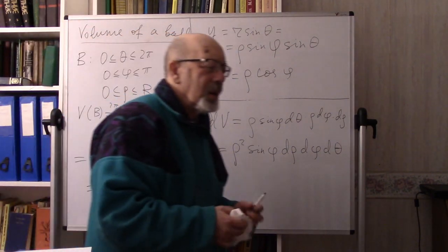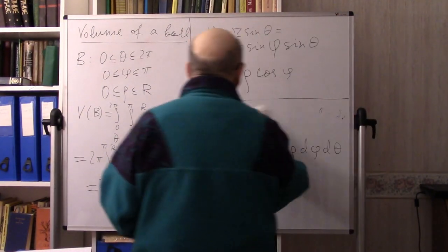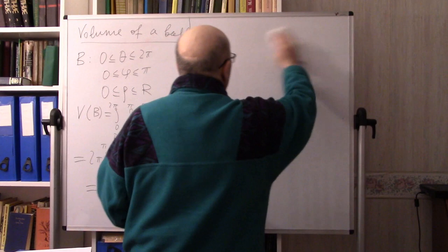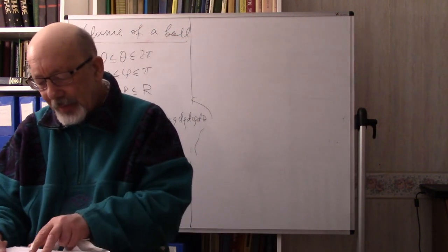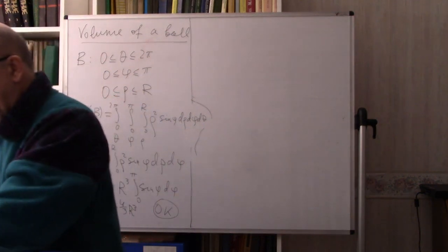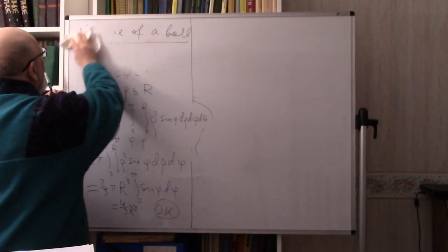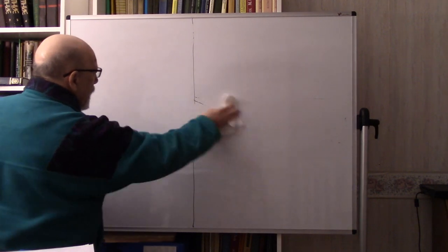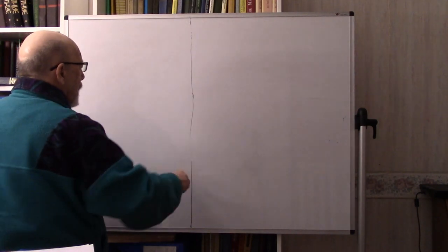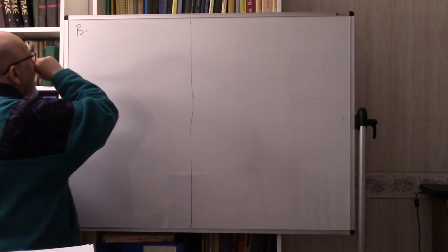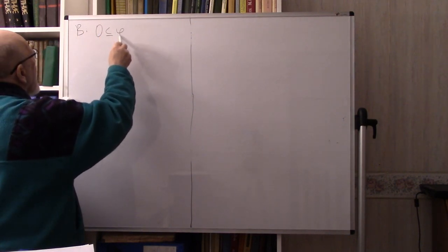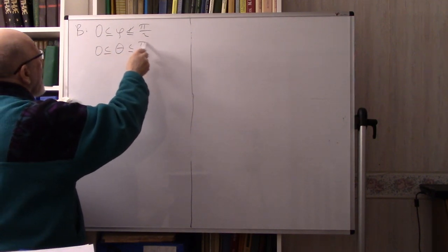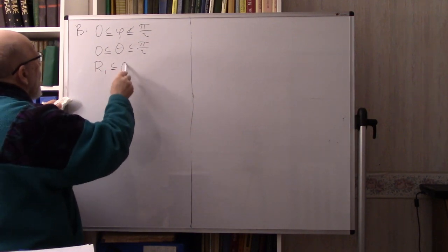You see how it works. Now I'm going to solve several more examples to show how to work with spherical coordinates. The next example is the following domain B defined by: φ between 0 and π/2, θ between 0 and π/2, and R₁ < ρ < R₂.